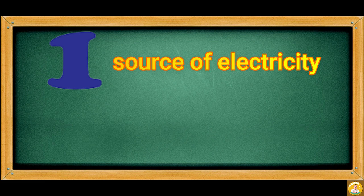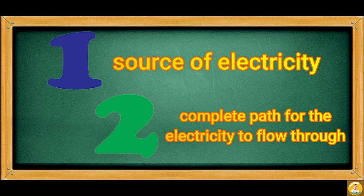How does electricity flow to your appliances? Two conditions must be met in order for electricity to flow. First, there must be a source of electricity. Second, there must be a complete path for the electricity to flow through.